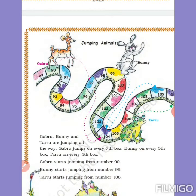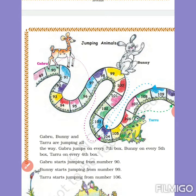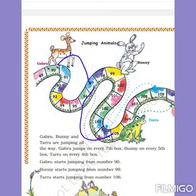Gabru, Bani and Taru are jumping all the way. Gabru jumps on every 7th house. You can see after 90, Gabru moved to 97. Then 97+7=104, so Gabru comes to 104. Then 104+7=111 - Gabru will jump somewhere here because 111 is not visible in the current view.